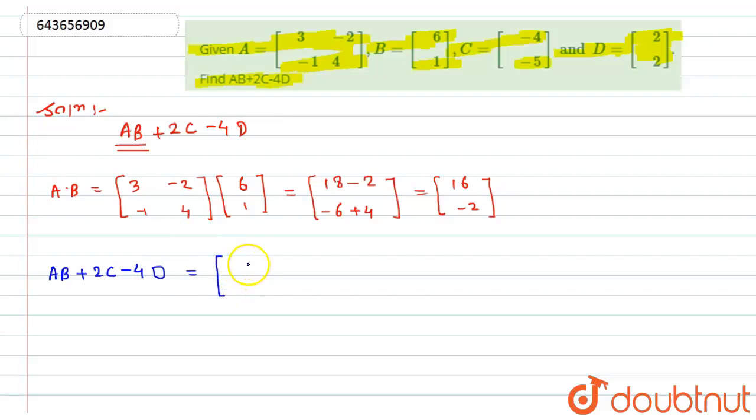It will become equal to AB, which we found is [16; -2], plus 2 times C, which is [-4; -5], then minus 4D where D is [2; 2].